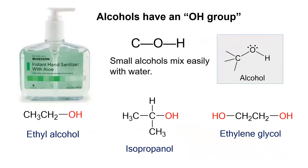When an organic compound contains an OH group — that is, an oxygen bonded to a hydrogen — we call that compound an alcohol. Small alcohols mix very easily with water, such as ethyl alcohol, also known as drinking alcohol.